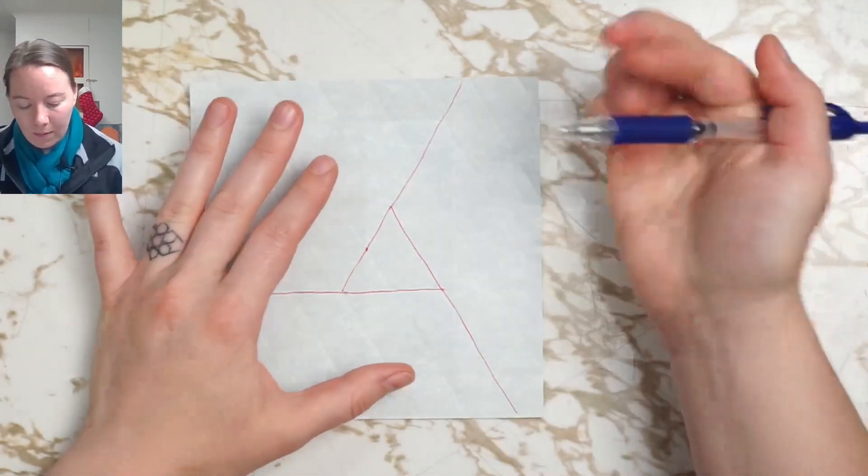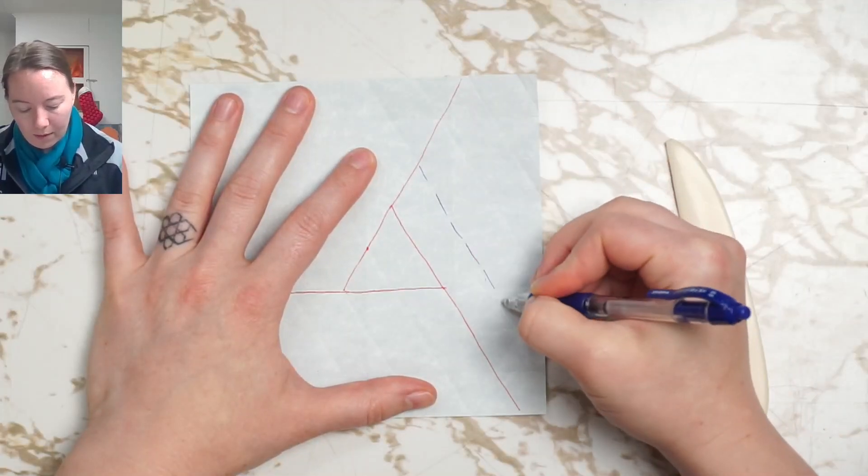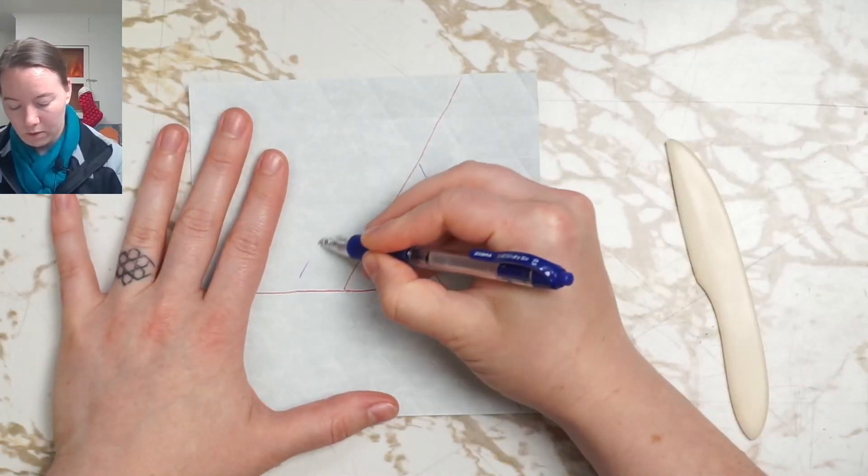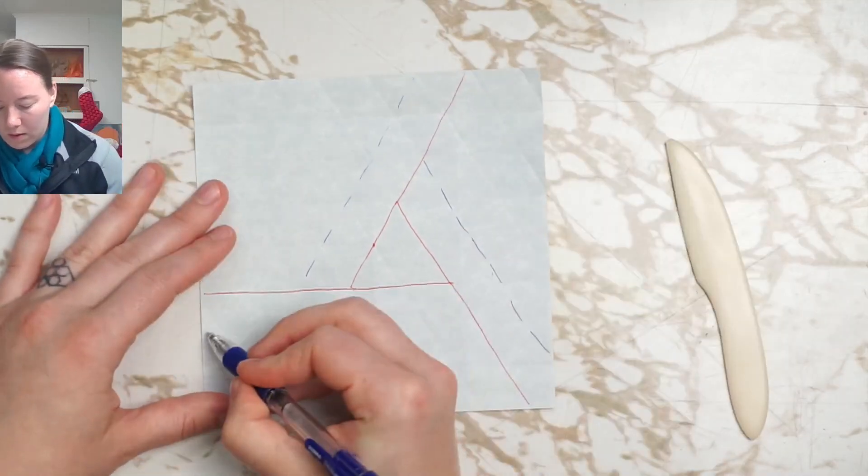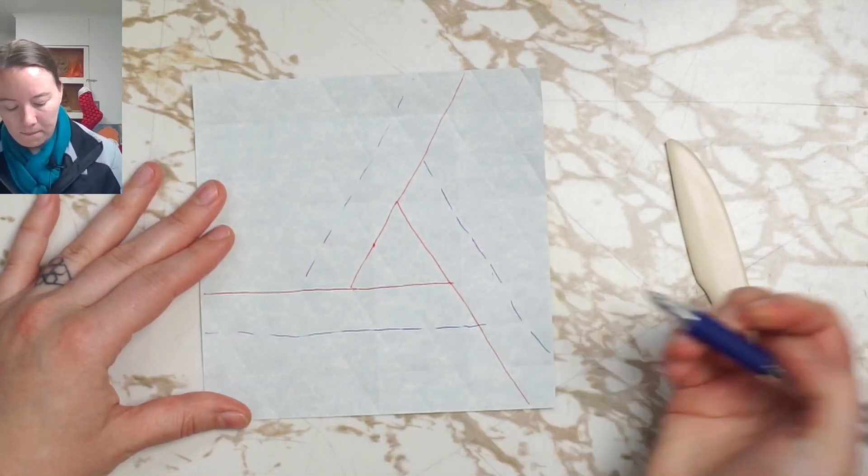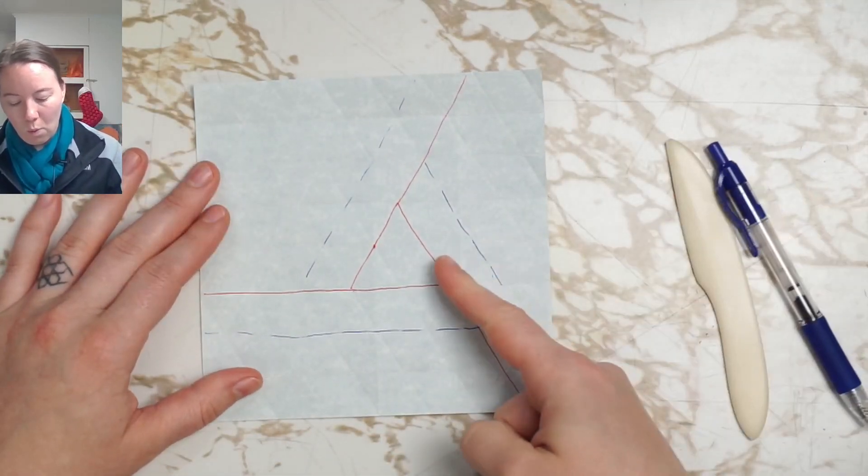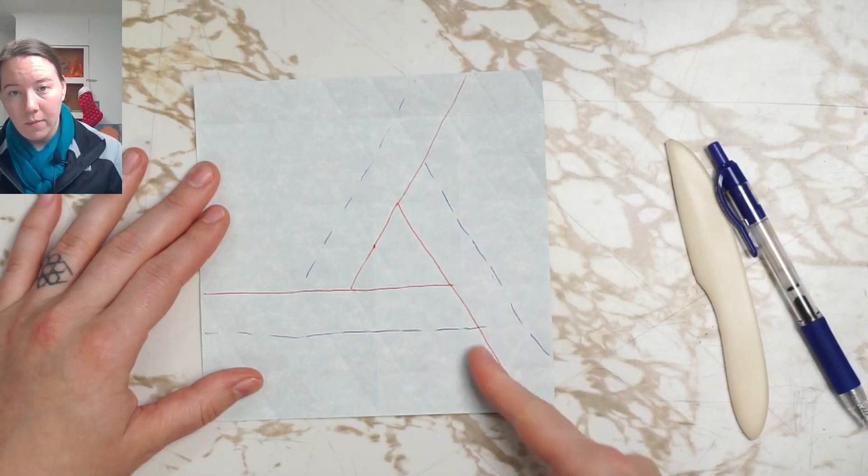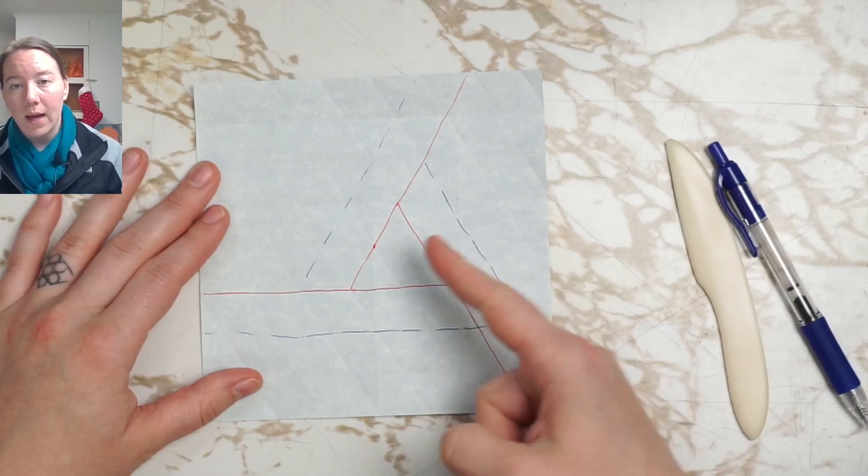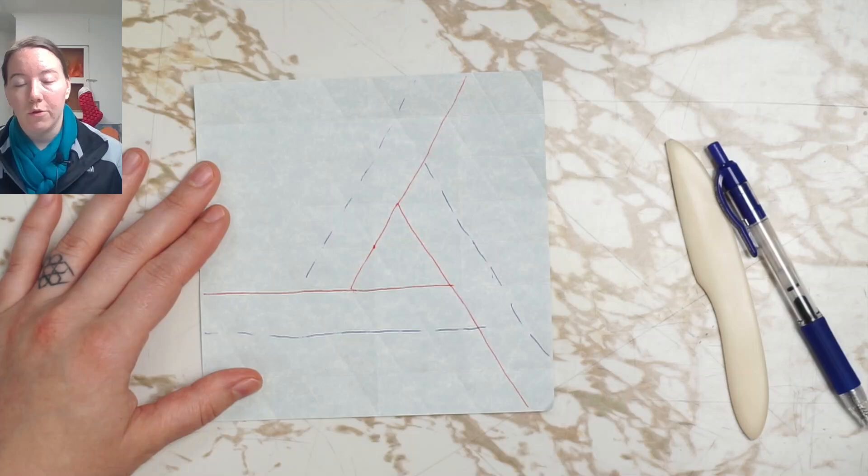Next I'm going to put in my valley folds which are one spacing away from each mountain fold, further away than the central triangle.